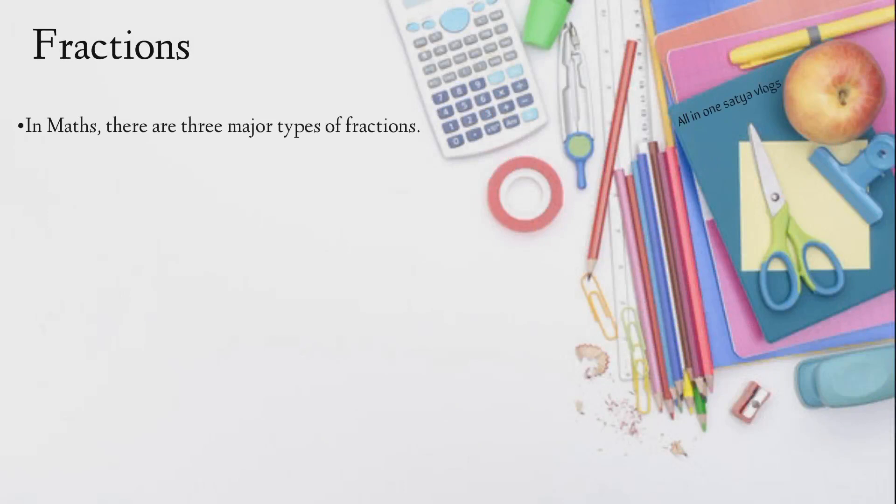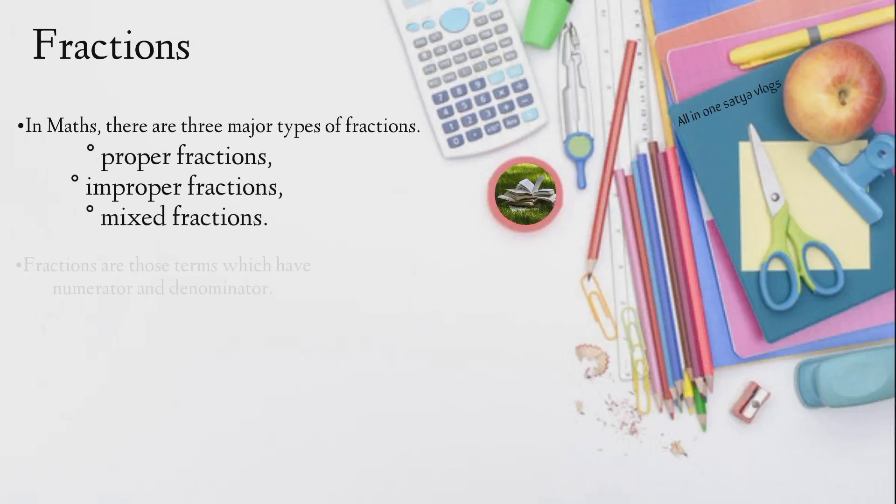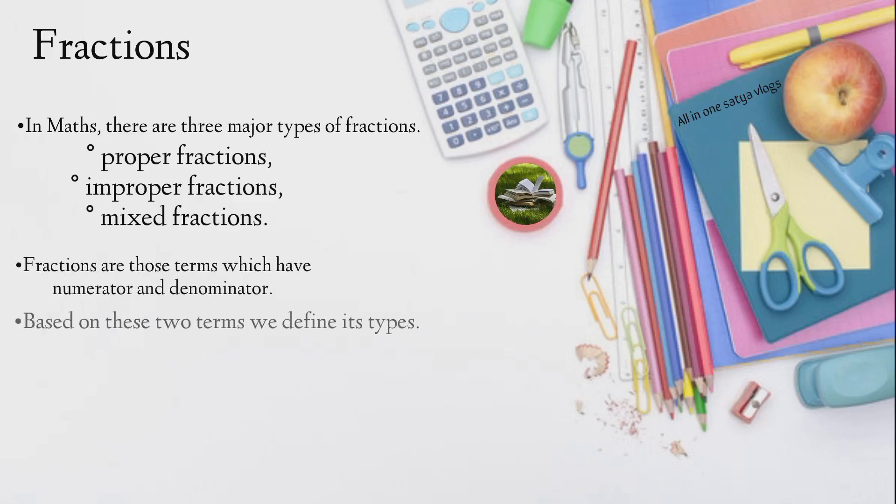Fractions. In maths, there are three major types of fractions: proper fractions, improper fractions, and mixed fractions. Fractions are those terms which have numerator and denominator. Based on these two terms, we define its types. Fractions are the terms used to determine the parts of a whole object.